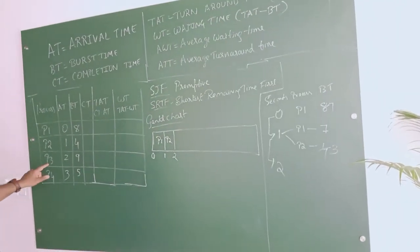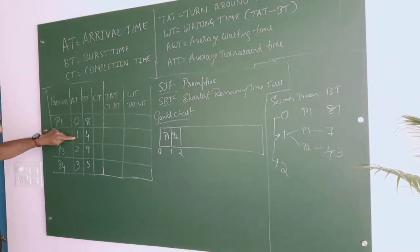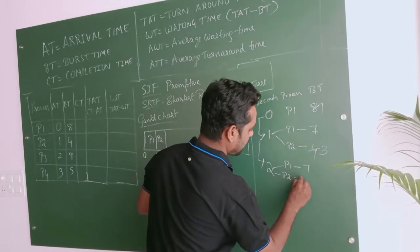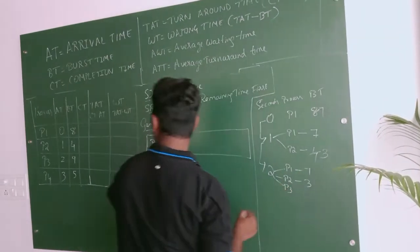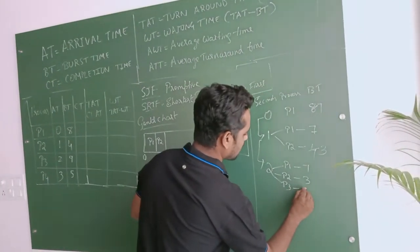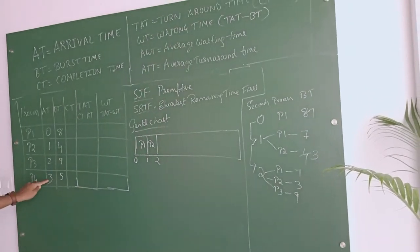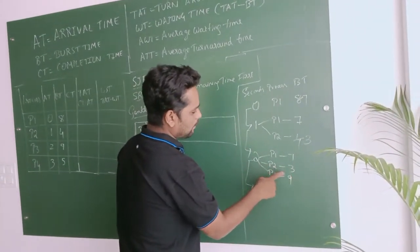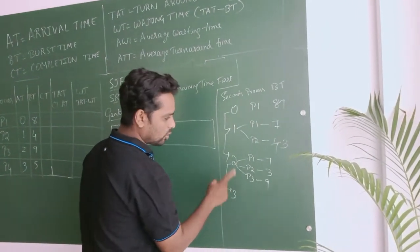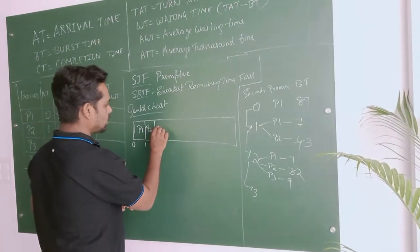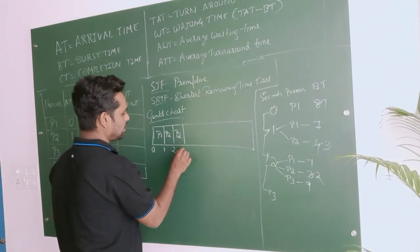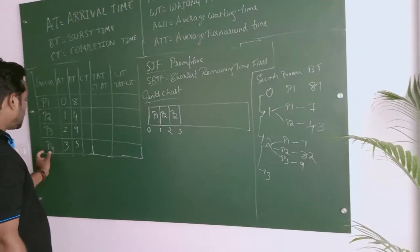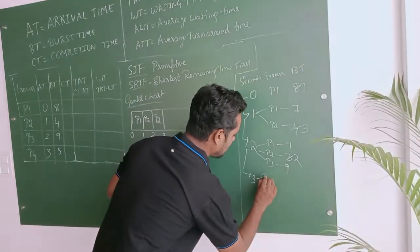At 2 seconds, P1, P2, and P3 can execute. P1 has 7 remaining, P2 has 3 remaining, and P3 arrives with 9 seconds. Execute until the next process arrival time — 3 seconds. P2 has the shortest time, so P2 executes for 1 second, remaining becomes 2. P2 executes again for 1 second to make it 3 seconds.